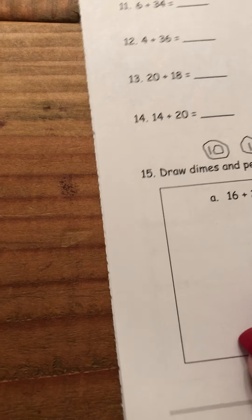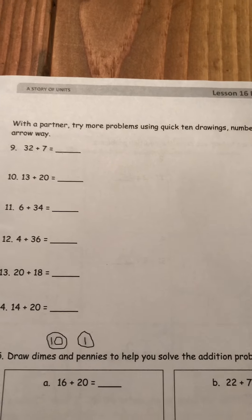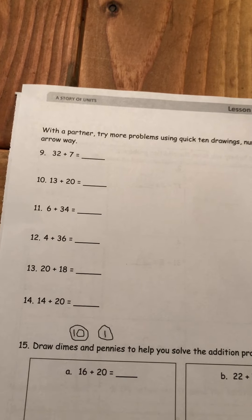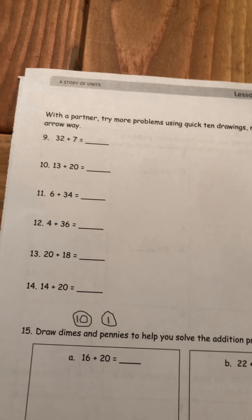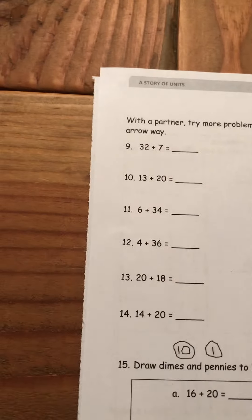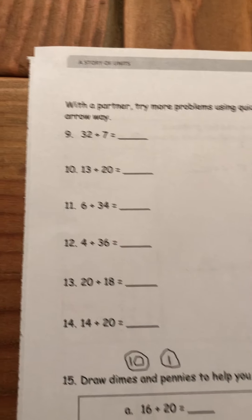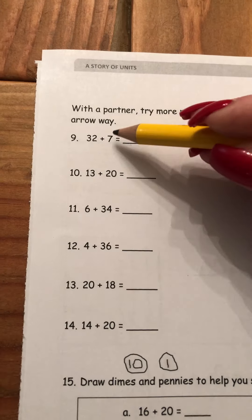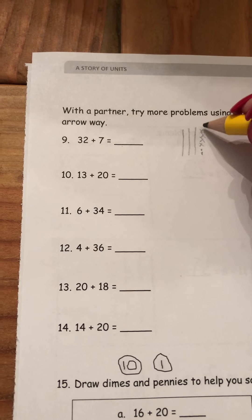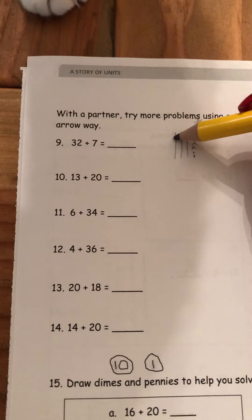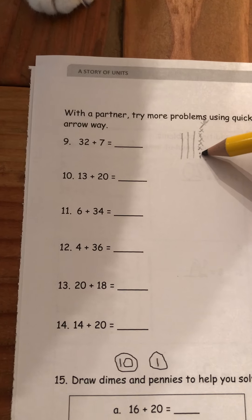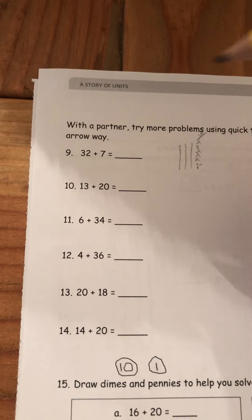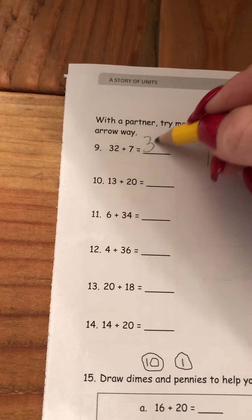Turn your paper over. And this one says, with a partner, try more problems using quick 10 drawings, number bonds, or the arrow way. We're going to stick with the same one just so we get one really down well. And your partner is me. So it says 32 plus 7. I'm going to do quick 10s next to it. And I'm going to say 10, 20, 30, 31, 32. And then I'm going to do 7 little X's. 1, 2, 3, 4, 5, 6, 7. And then I count it. 10, 20, 30, 31, 32. And now I'm going to count on from 32. 33, 34, 35, 36, 37, 38, 39. 32 plus 7 equals 39.